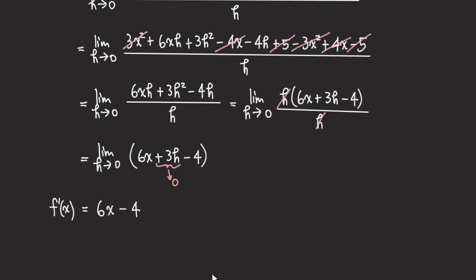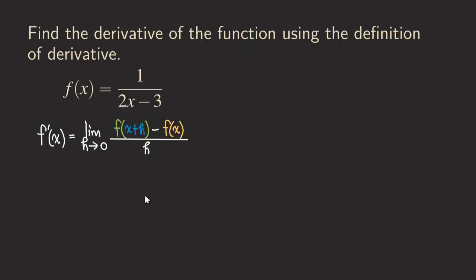Now let's look at the next example. For the second example, we have a rational function and we are still using the same way to find the derivative — using the limit of the difference quotient. We start writing the limit as h approaching zero. Now in the numerator, we need to start filling in the first function.